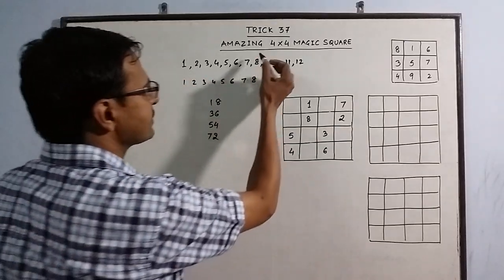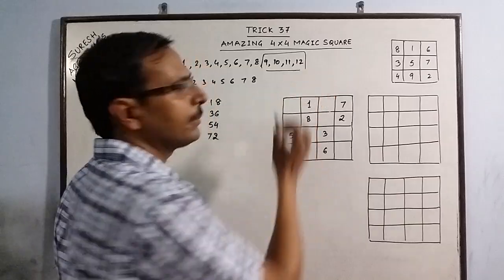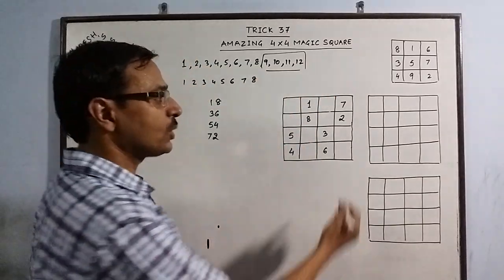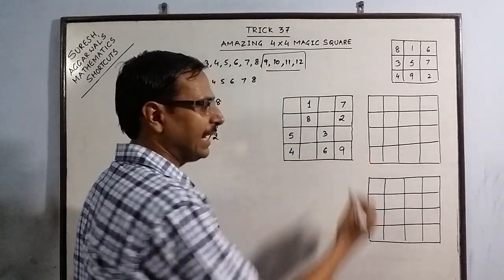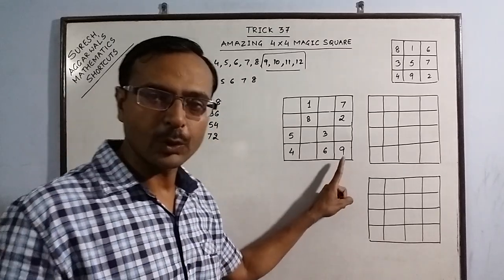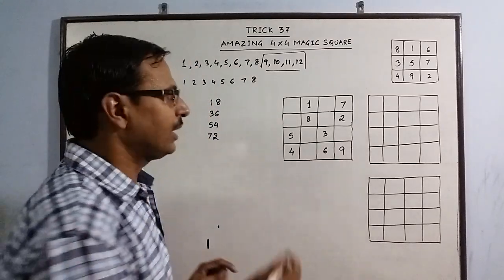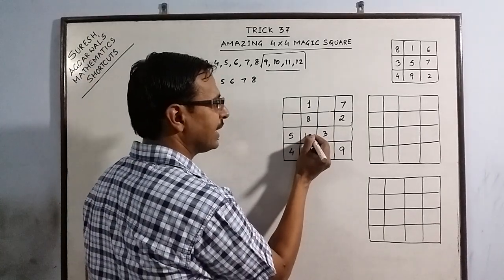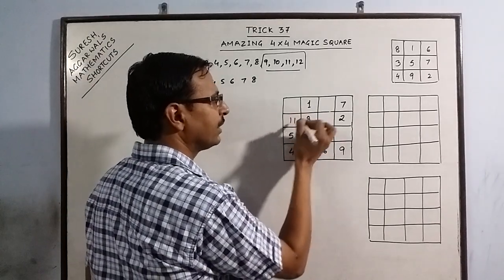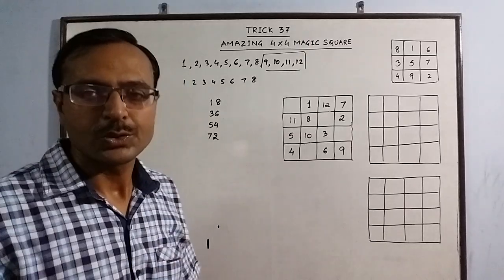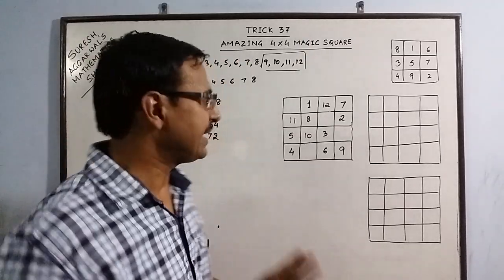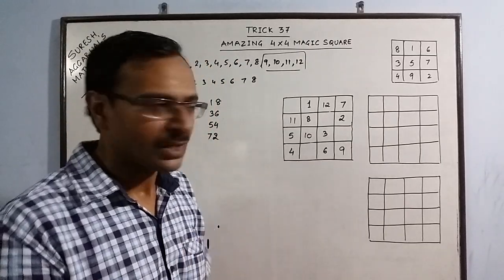Now, the next 4 numbers. Out of these 4 numbers, 9 always occupies the corner cell. This corner cell is occupied by 9. And 10, 11 and 12, I go zigzag like this. 10, 11 and 12. So, 9, 10, 11 and 12, the place is again fixed.